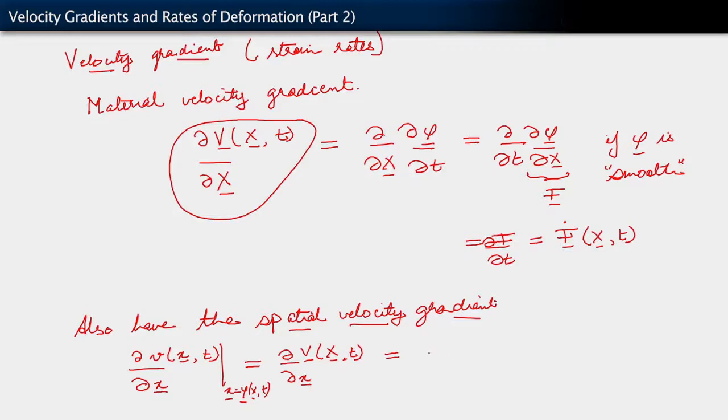So, we write this as partial of V with respect to capital X, partial of capital X with respect to little x. But then we observe that for the first term on the right, we already have a simpler or a different form. Derivative of the velocity with respect to the reference position is simply Ḟ. We observe that just above here. And then partial of capital X with respect to little x is just F inverse. So we have Ḟ F⁻¹.